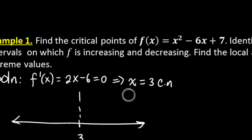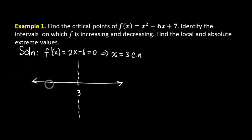So what do we do with this critical number? We subdivide the number line into 2 sections because there's only one critical number — a section to the left of 3 and a section to the right of 3. A good test point to the left would be 0, and to the right of 3 we could use 5. These are arbitrary numbers as long as they're contained in that interval.